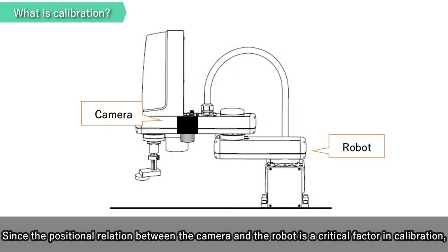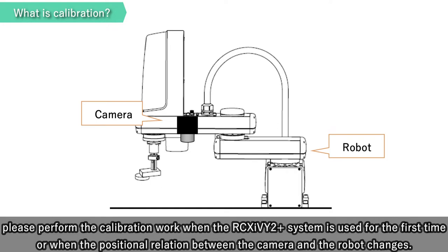Since the positional relation between the camera and the robot is a critical factor in calibration, please perform the calibration work when the RCX-IV2+ system is used for the first time or when the positional relation between the camera and the robot changes.